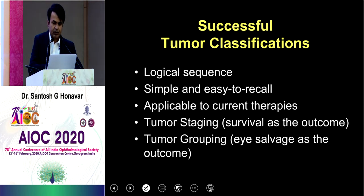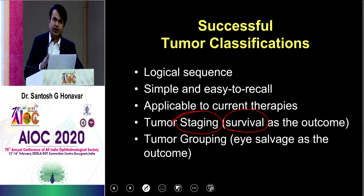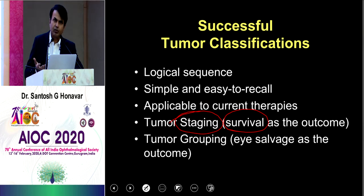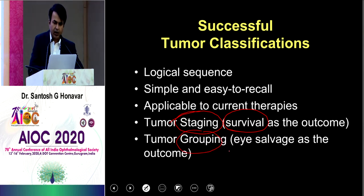With staging, you tell parents your child has no risk to life — stage 0 — or that there is a very remote chance of survival at stage 4B. That's what staging means, whereas grouping — the organ is in question, so eye salvage is for grouping.